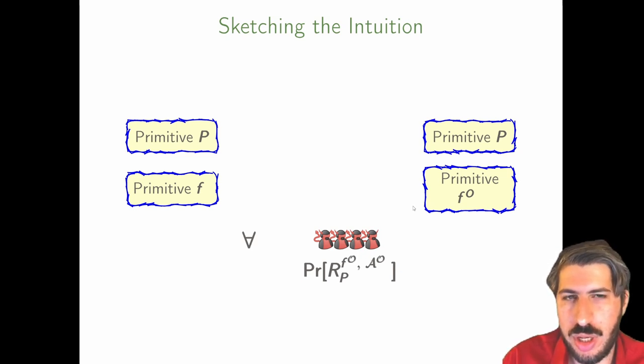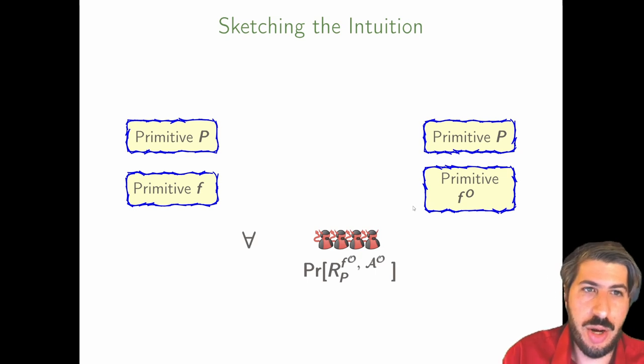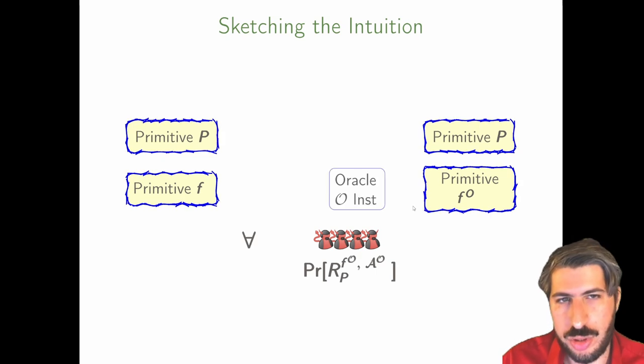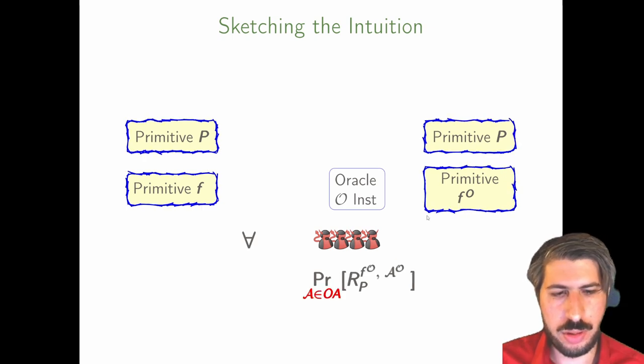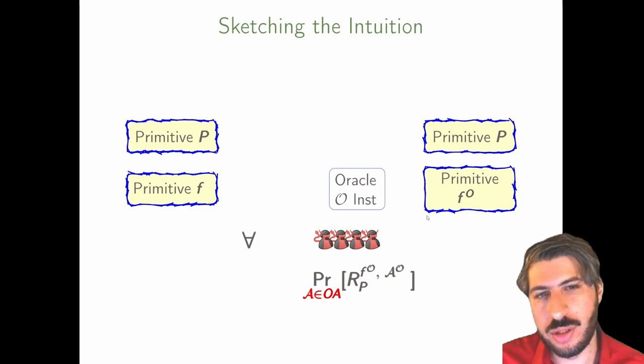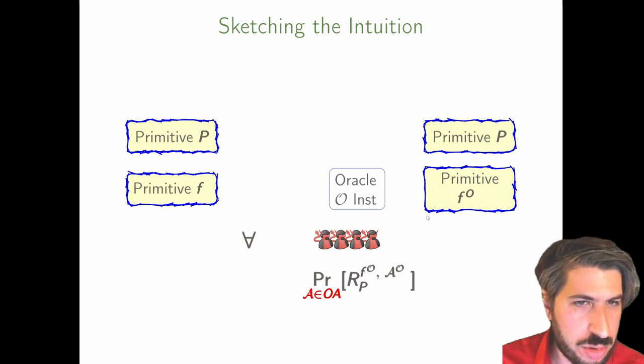That is, our security proof now samples over oracle instantiations. We do sample over all adversaries that have access to the oracle O. Thus, we prove that the reduction in the standard model can be used to bound the advantage of adversaries with access to a particular oracle instantiation.